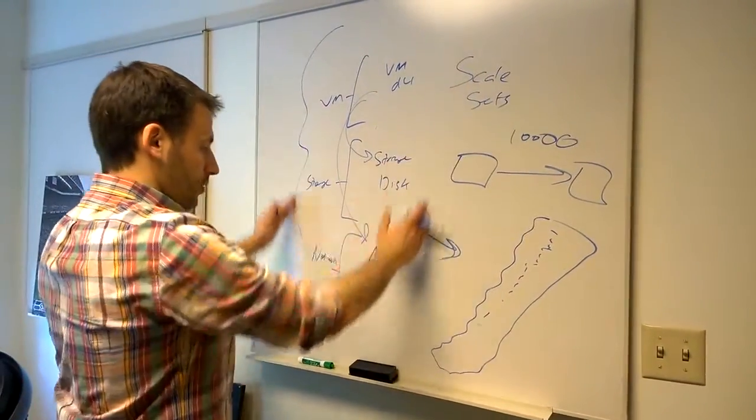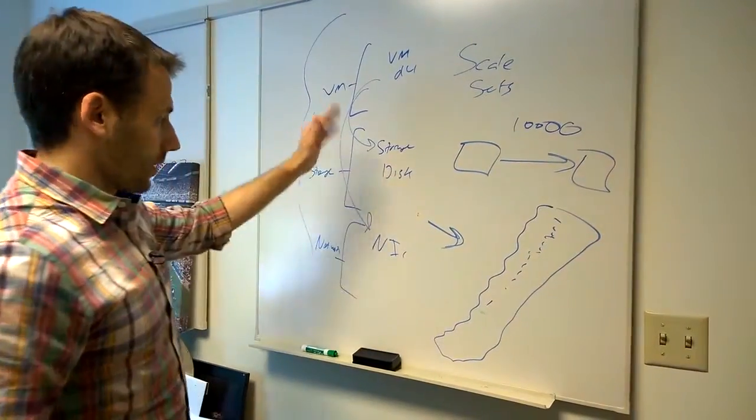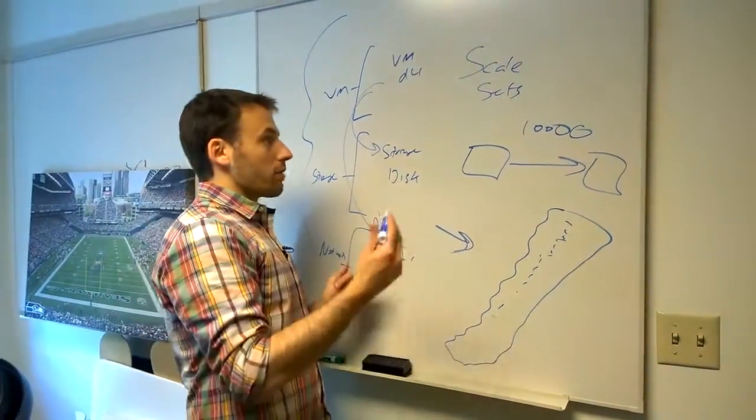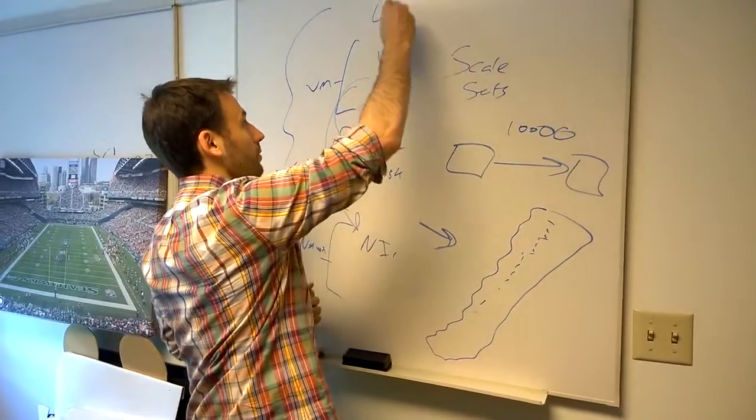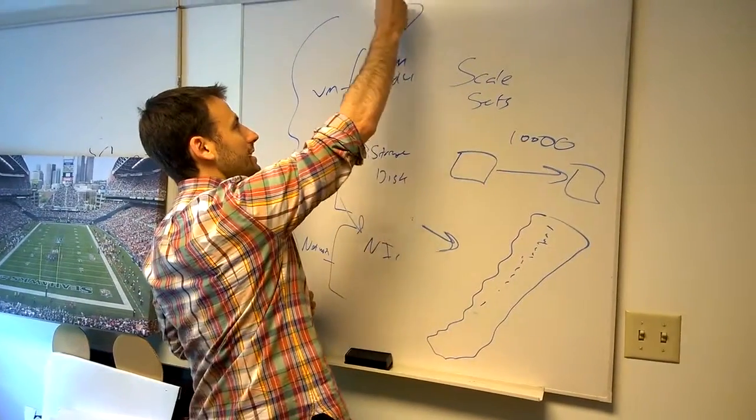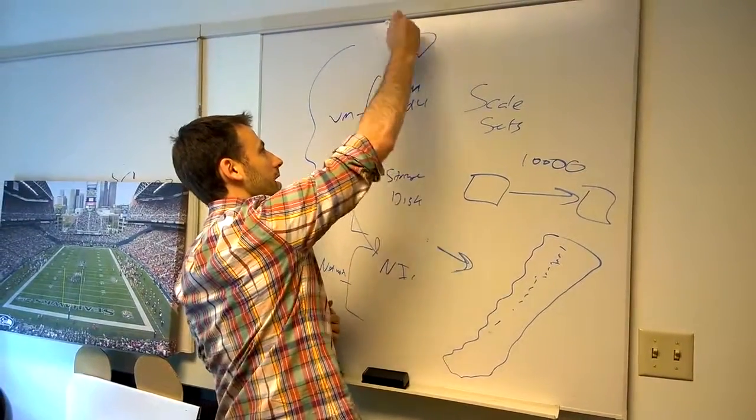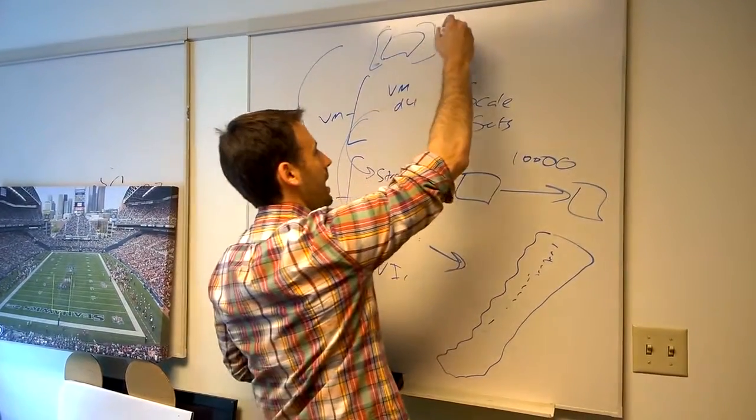What this ends up doing is you effectively say similar sort of construct. You basically say, okay, here's my NIC, here's my storage account, here's my virtual machine. This is what my VM looks like. But now you can treat this as a unit.